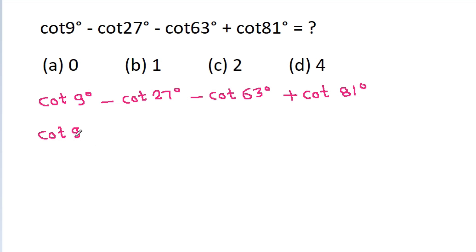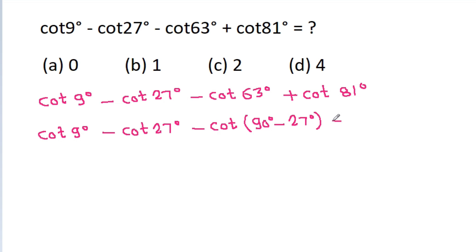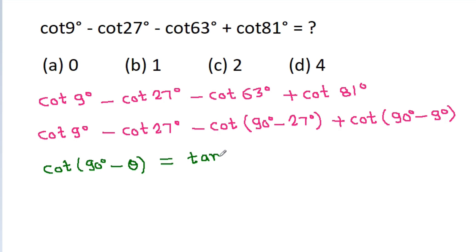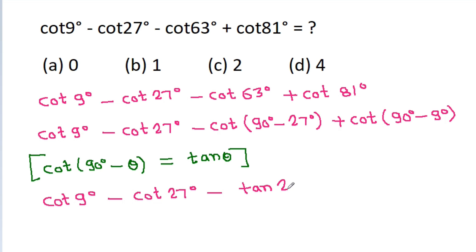We note that 63° = 90° - 27° and 81° = 90° - 9°, and since cot(90° - θ) = tan θ, the expression becomes cot 9° minus cot 27° minus tan 27° plus tan 9°.